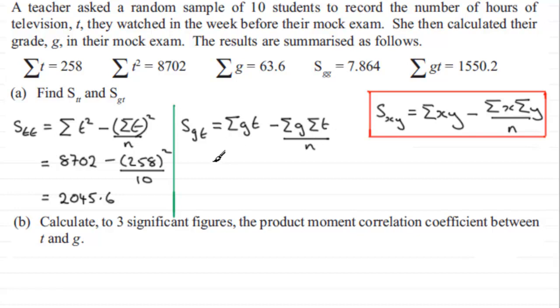So filling our values in again, sigma gt we're told is 1550.2, and then minus sigma g which is 63.6 and we multiply that with sigma t which is 258, and divide this by 10. And again working this out on your calculator you should find you get minus 90.68.